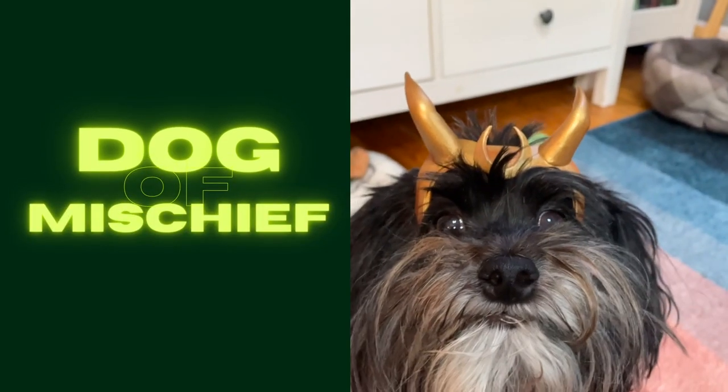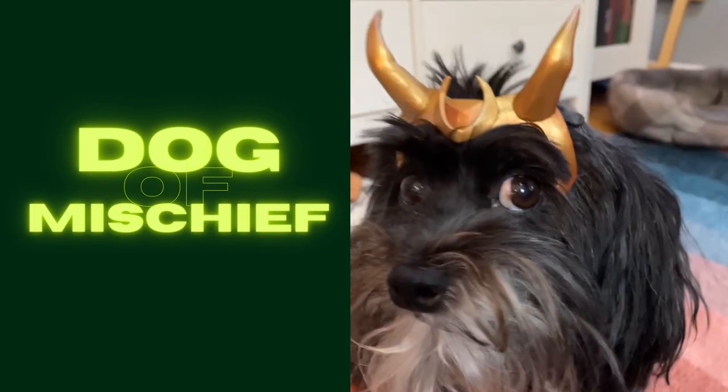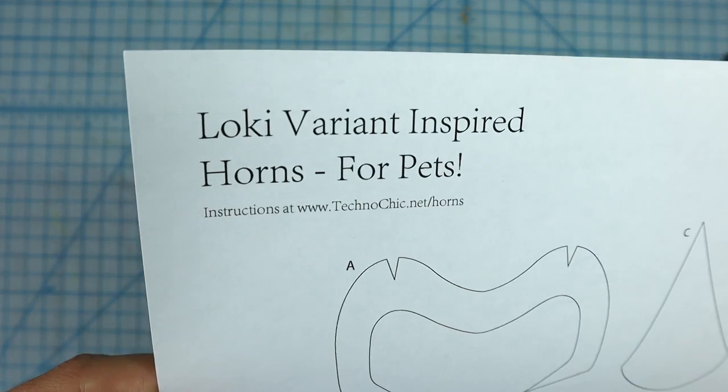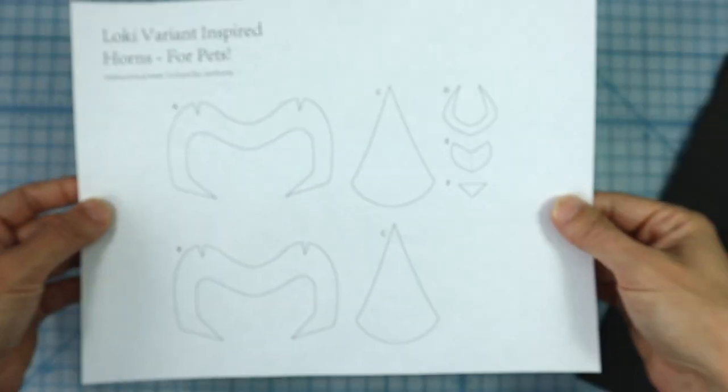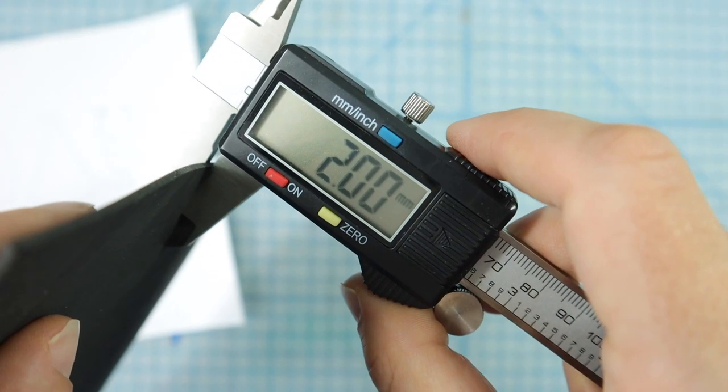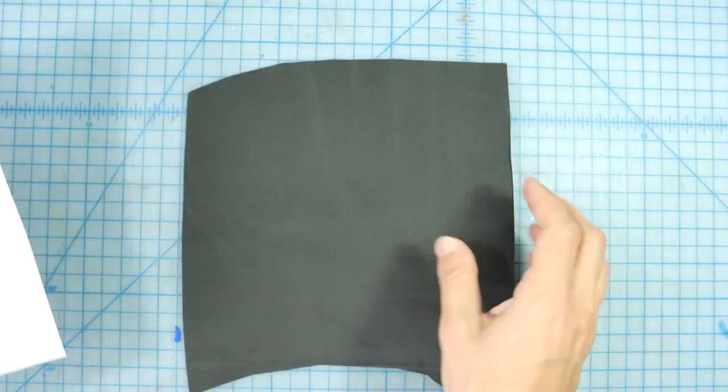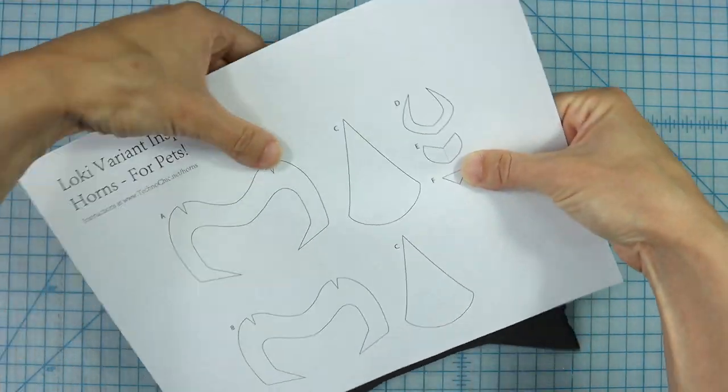In this tutorial, I'll show you how to make a Loki crown for your pet. I have my printed template and I'll also need a piece of 2mm cosplay foam. This template only uses a tiny bit, so it's a great project for a scrap piece.